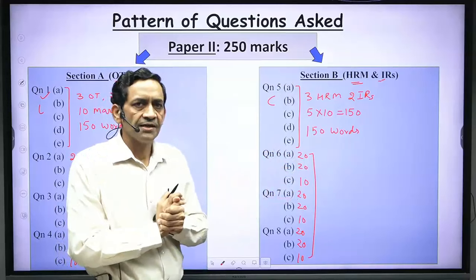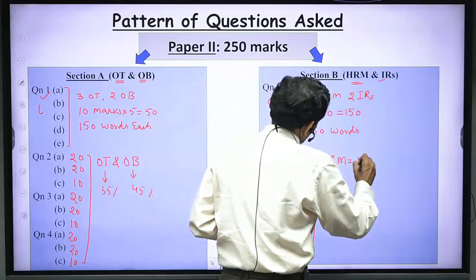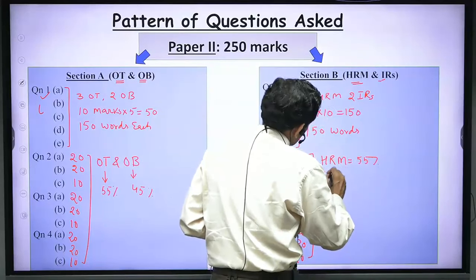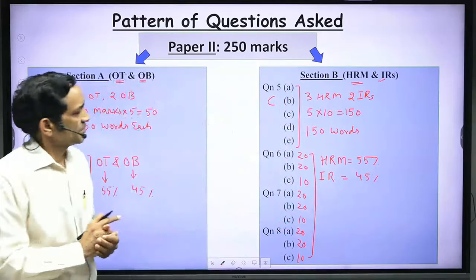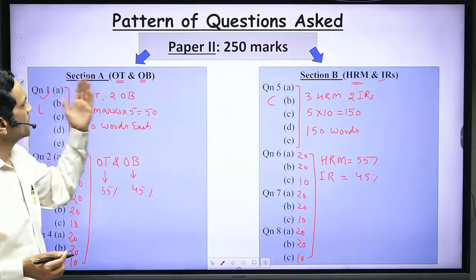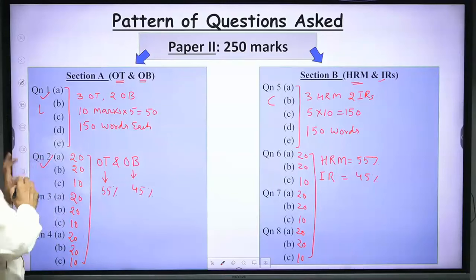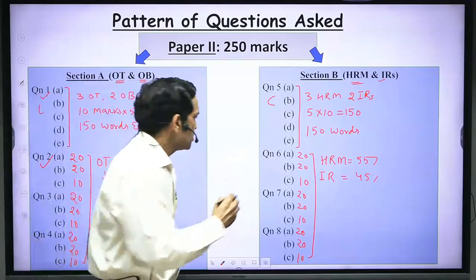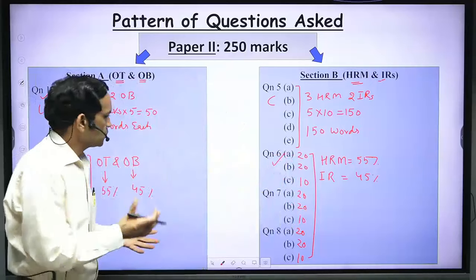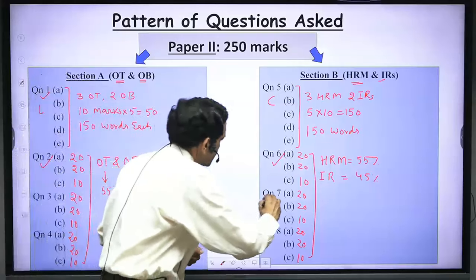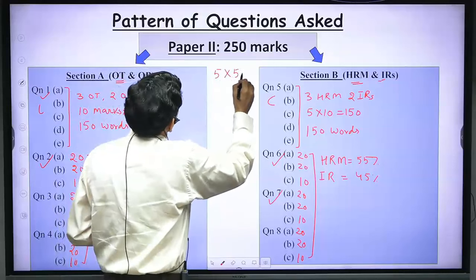All questions in Section B are asked from a mix of HRM and IR — you will hardly find any question from HRM only or IR only. You have to prepare both, but broadly around 55% of questions are from HRM and around 45% from IR. In Paper 2, questions 1 and 5 are compulsory; out of 2, 3, and 4 you attempt at least one; out of 6, 7, and 8 you attempt at least one; and the fifth question can be from anywhere — giving you five questions of 50 marks each, totaling 250 marks.